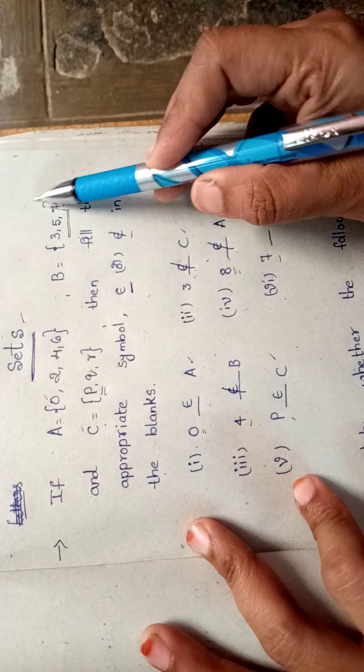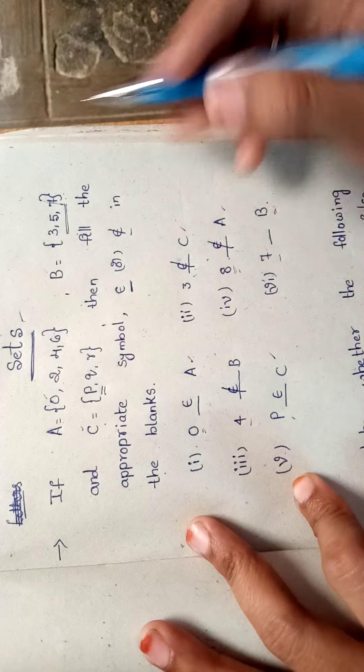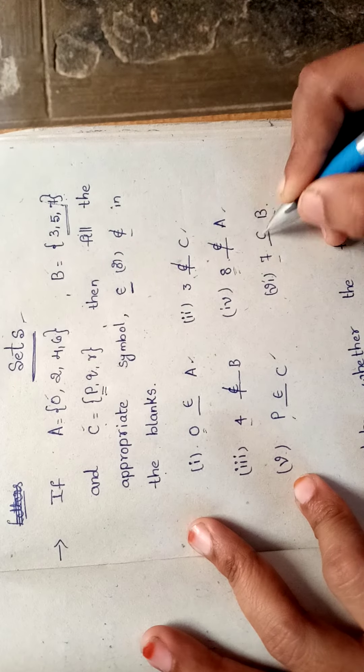Let us check. Seven is in the set B. We can write seven belongs to B.